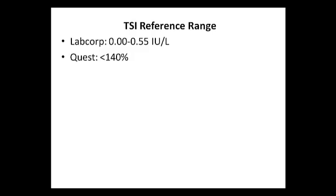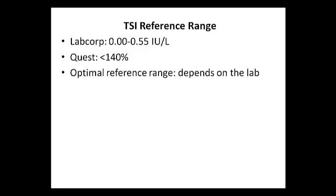On the other hand, Quest Diagnostics uses a percentage, and their normal range for thyroid-stimulating immunoglobulins is less than 140%. Since there are different units used, the optimal range will vary depending on the lab, although for labs that use a percentage, I like to see the thyroid-stimulating immunoglobulins less than 80%.